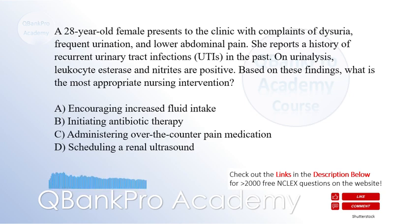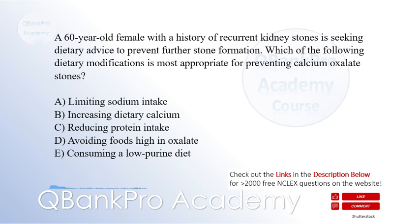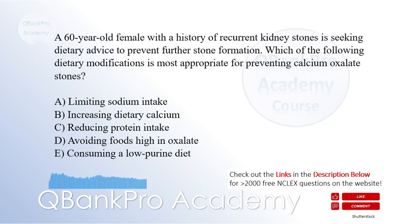A 60-year-old female with a history of recurrent kidney stones is seeking dietary advice to prevent further stone formation. Which of the following dietary modifications is most appropriate for preventing calcium oxalate stones? A. Limiting sodium intake. B. Increasing dietary calcium. C. Reducing protein intake. D. Avoiding foods high in oxalate.